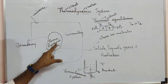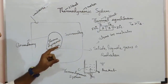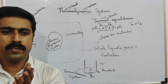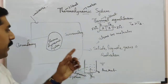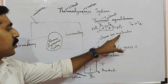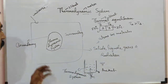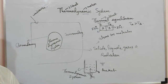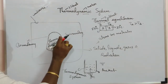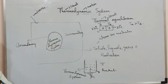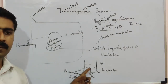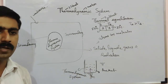To recap: a thermodynamic system is a distinct part of the universe made up of a collection of a large number of particles — atoms or molecules. It is separated from the surrounding by a layer called the boundary. An example is a bucket of water.